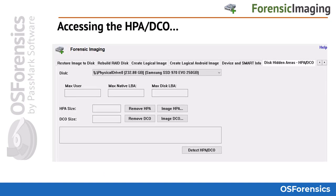The final tab in the Forensic Imaging Module is the Disk Hidden Areas — HPA/DCO tab. An HPA, or Host Protected Area, and a DCO, or Device Configuration Overlay, are hidden areas on a hard drive that are normally inaccessible to the majority of users and software, typically created by the disk manufacturer. OS Forensics can detect the presence of an HPA or DCO and can even create forensic binary images of these hidden areas, helping investigators conduct a targeted analysis to ensure nothing was hidden there by the user. You also have the option of removing the HPA or DCO, which removes the hidden area but does not delete the data stored within, making it accessible to forensic tools.